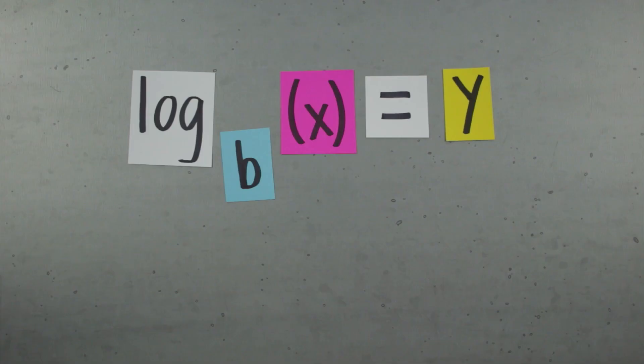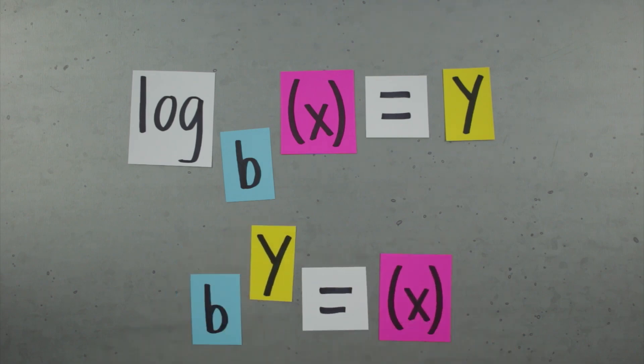To understand why, we have to talk about the base of the logarithm first before we can talk about the argument. By definition, when we say log base b of x equals y, that's the same thing as saying b to the y equals x.